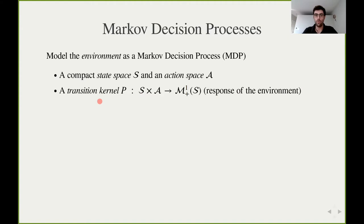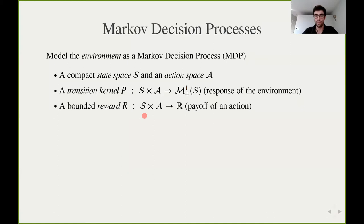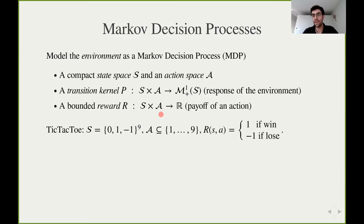We model the response of the environment through a transition kernel which maps a certain state and action pair to the distribution of the states of the system at the next time step, and we have a reward function quantifying how good a certain state and action pair are. In the classical example of tic-tac-toe, the state of the system is given by the configuration of the board, the actions are where to put the next sign the agent will play, and the reward is given by one if the agent wins and minus one if it loses.